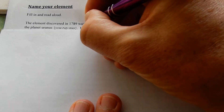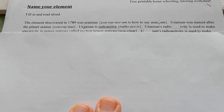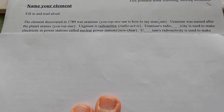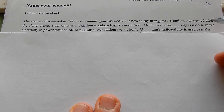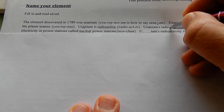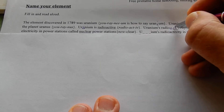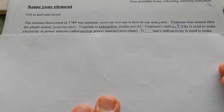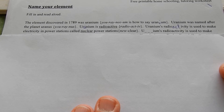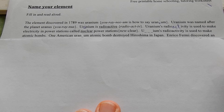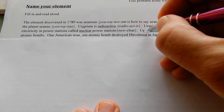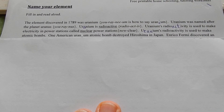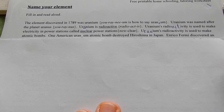Uranium is radioactive. Uranium's radioactivity is used to make electricity in power stations called nuclear power stations. Uranium's radioactivity is also used to make atomic bombs.